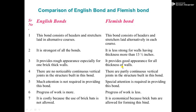We have discussed about the English bond and the Flemish bond and the different types of each. In today's video lecture, we are going to discuss about the difference or the comparison between the English bond and Flemish bond. The first point of comparison: in the English bond, it consists of headers and stretchers laid in the alternate courses. And in the Flemish bond, this bond consists of headers and stretchers laid alternatively in each course.